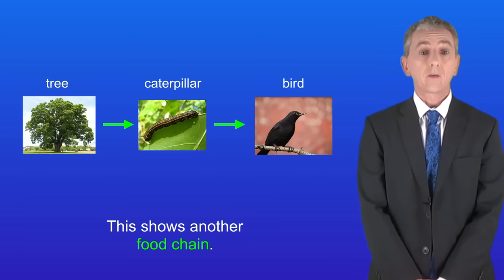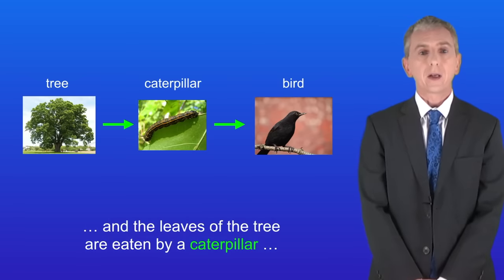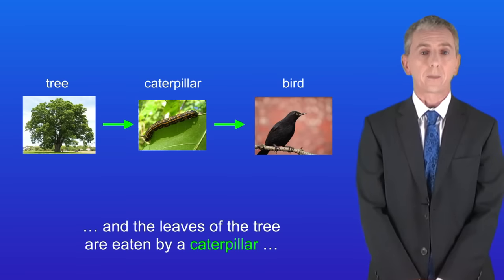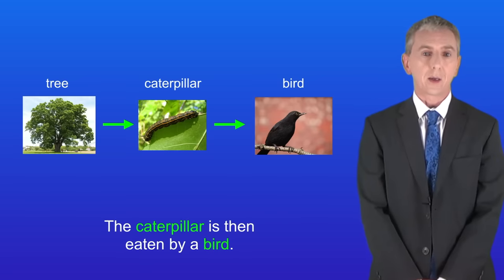Okay I'm showing you another food chain here. We start with a tree and the leaves of the tree are eaten by a caterpillar. The caterpillar is then eaten by a bird.